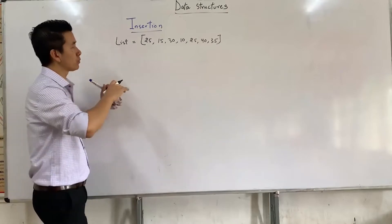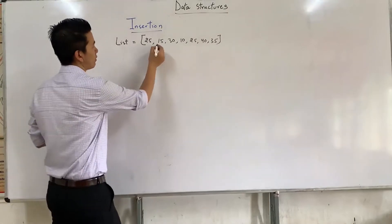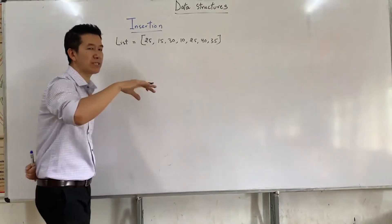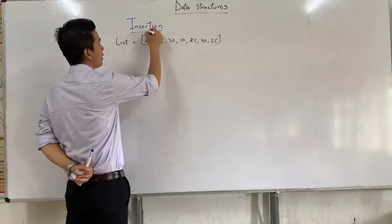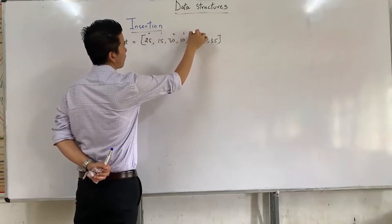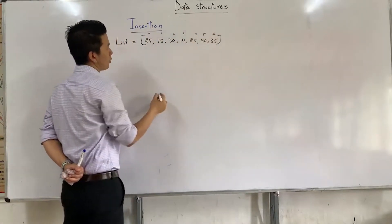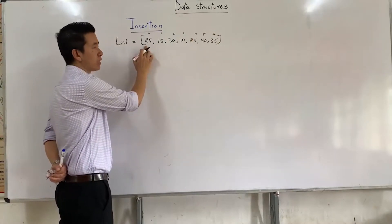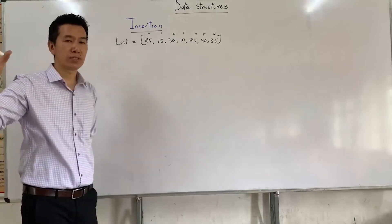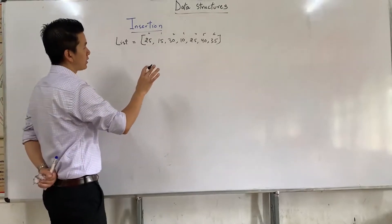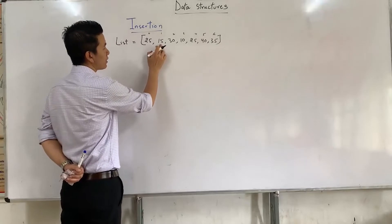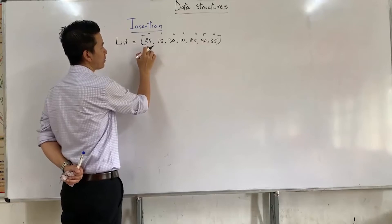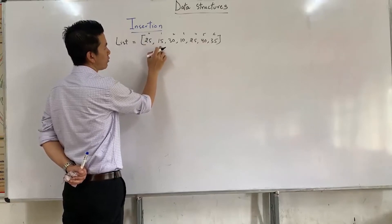The logic or algorithm of this program is: we need to pick up the element at index number one — that's index zero, one, two, three, four, five, six. I focus on this and then do the comparison. It's something similar to selection sort but with a bit of difference. So if 15 is less than 25, 15 should sit here and 25 should be pushed right here.